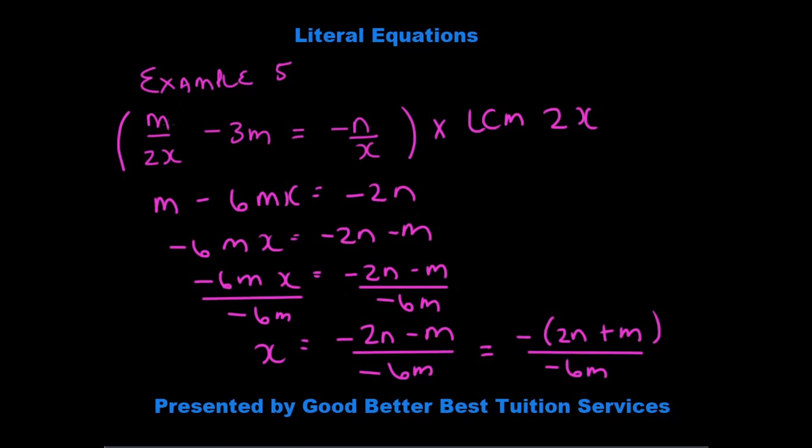We have to multiply each term by 2x. And when we multiply by 2x, in the case of the first term, the 2x will cancel each other out and we're left with m. And then we have minus 3m times 2x is minus 6mx is equal to here. The x will cancel the x and we are left with minus 2n.